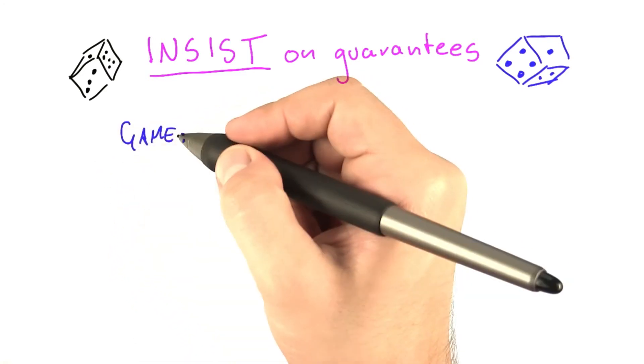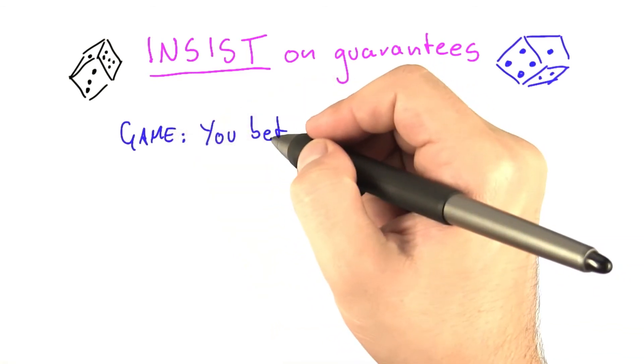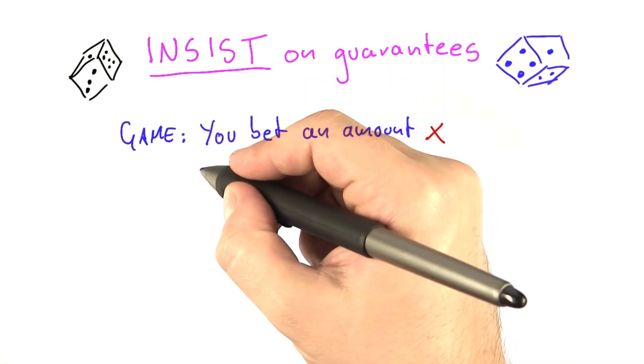So let's say that we play a game. And the rules of the game are as follows. You bet an amount x, whatever you want, and then you throw a die.